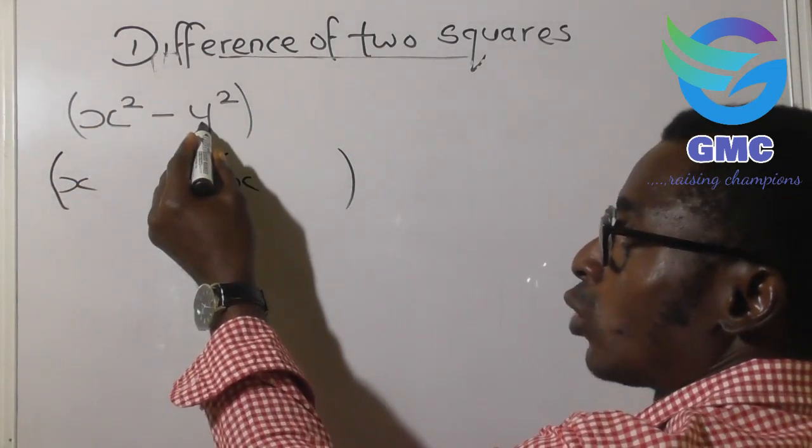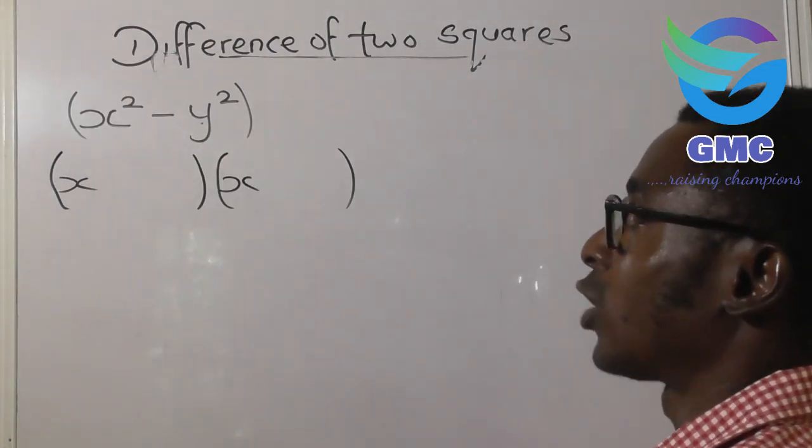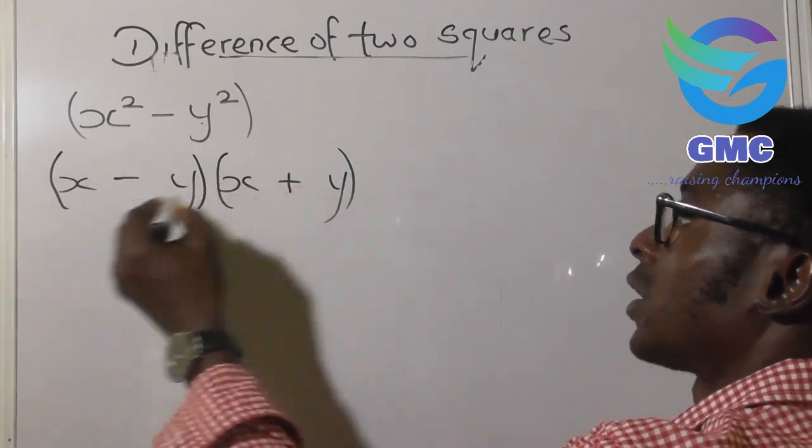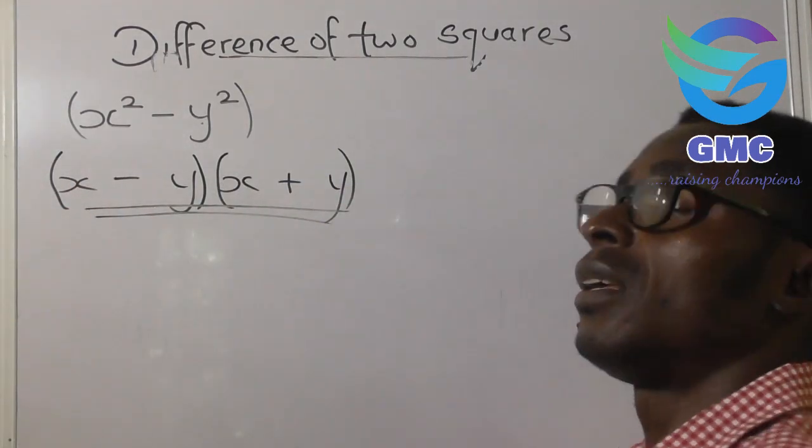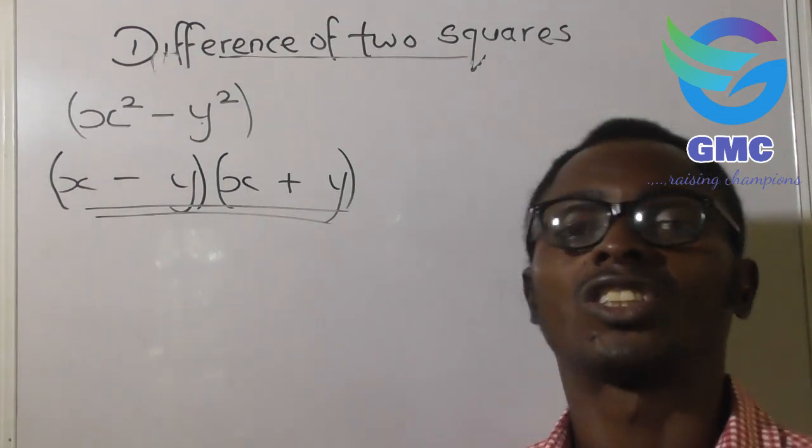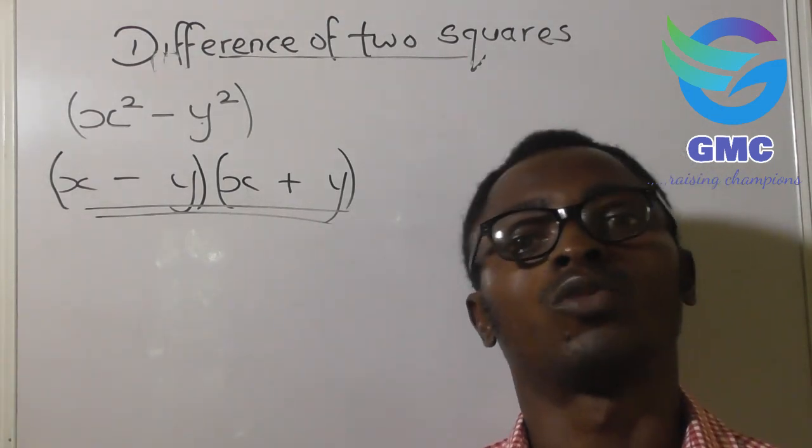The square root of the second, that's y squared, is y. So we bring a negative sign here, we bring a positive sign. And that is the solution for such difference of two squares.